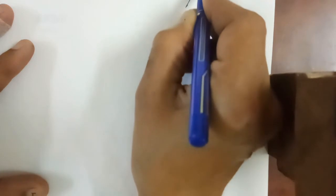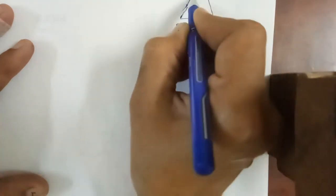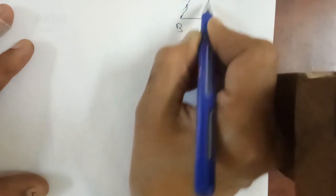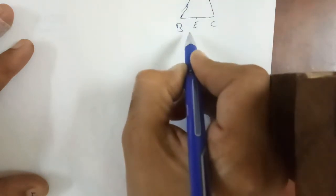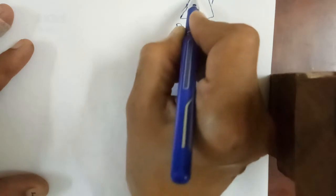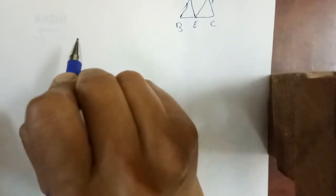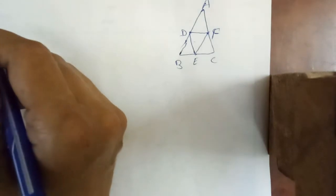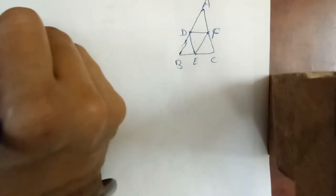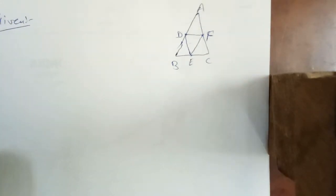For question number 5, draw triangle ABC. D is the midpoint of AB, E is the midpoint of BC, and F is the midpoint of AC. Join them to form triangle DEF — the smaller inner triangle. We need to find the ratio of their areas. Given that D, E, F are midpoints.